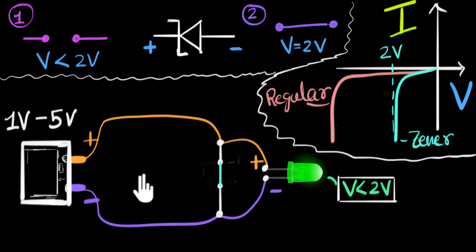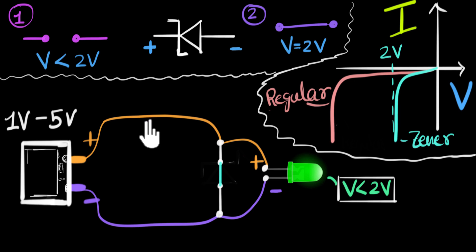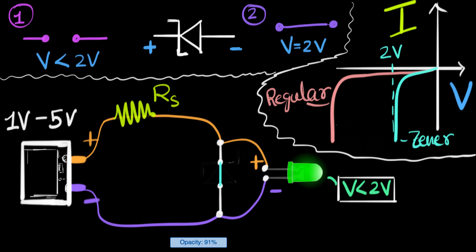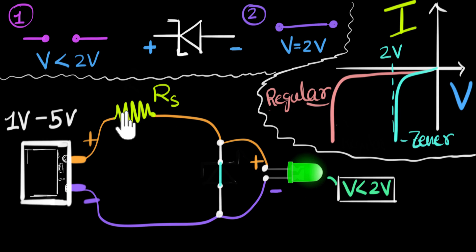To make sure it doesn't undergo a short circuit, what we can do is put a resistance in the circuit — an extra series resistance. We usually call that resistance RS, meaning it's in series with the circuit. We just put a series resistance over here, and our problem is now solved.